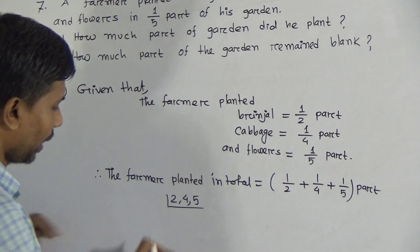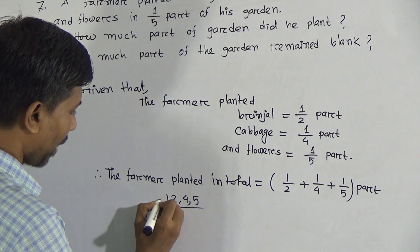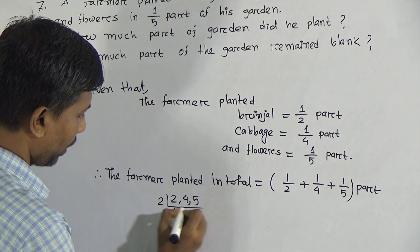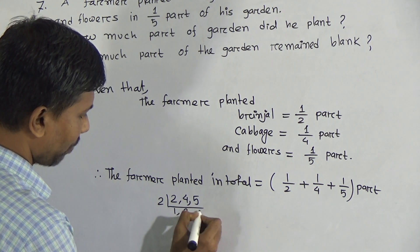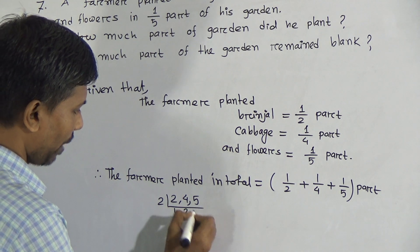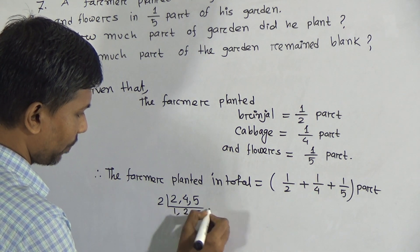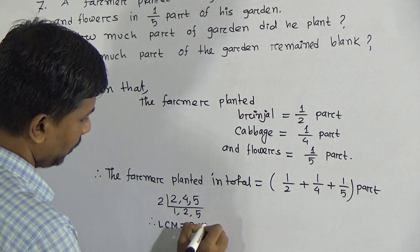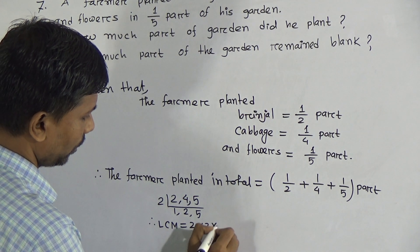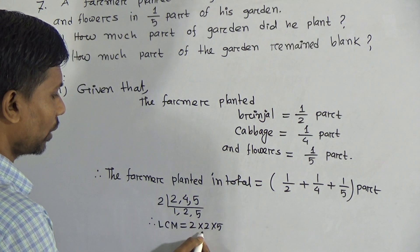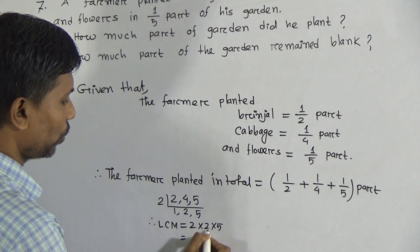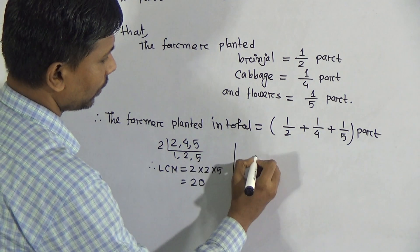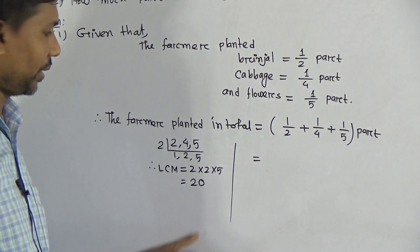Among these three numbers, 2 is the only common prime number. Divide 2 by 2, you get 1. Divide 4 by 2, you get 2. 5 is not divisible by 2, so 5 remains the same. Therefore LCM equals 2 into 2 into 5, that means 20. The LCM is 20.